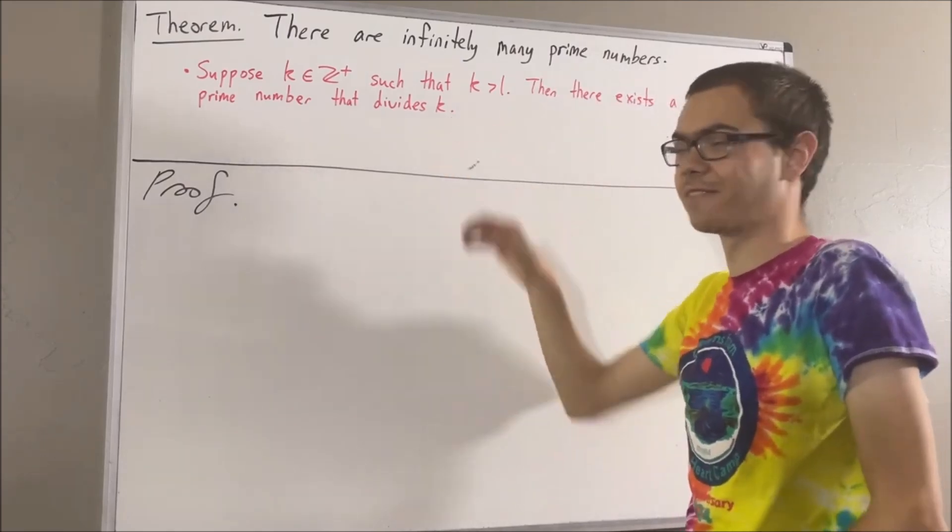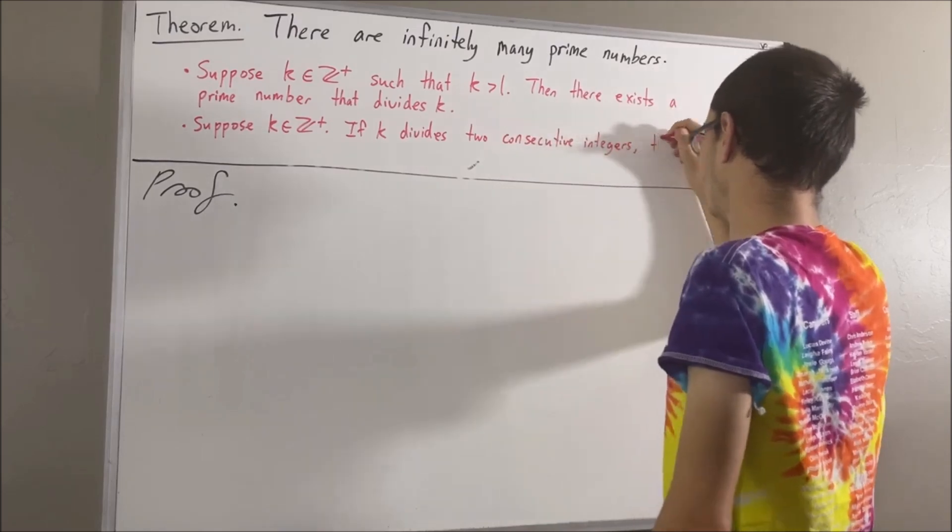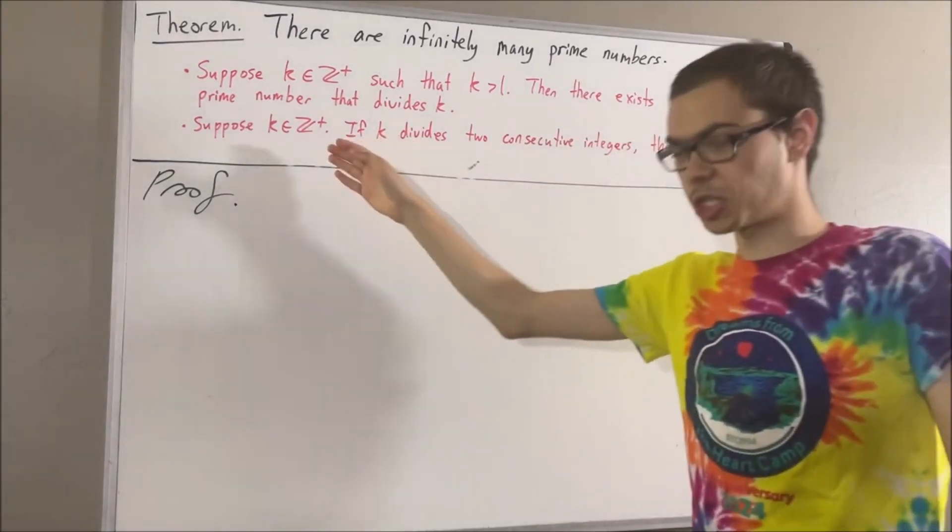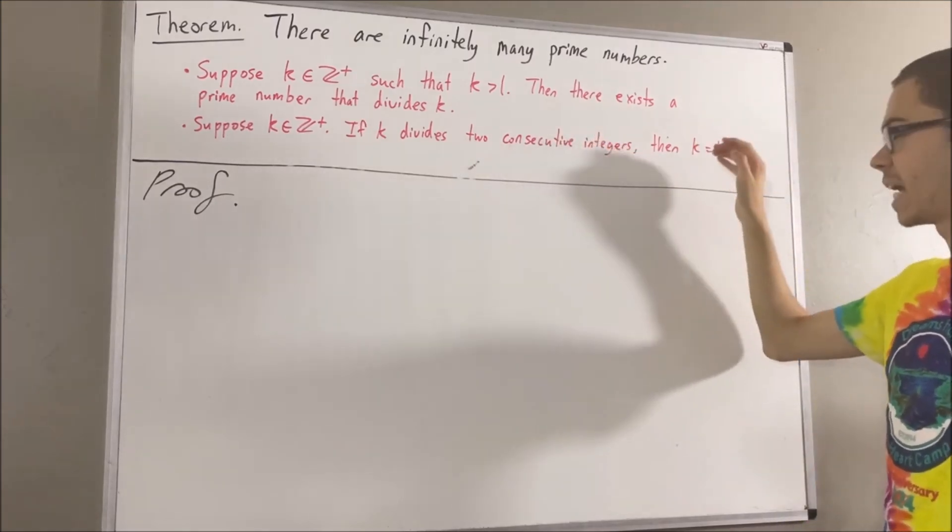And another fact that we're going to use is the following. Suppose k is a positive integer. If k divides two consecutive integers, then k is equal to 1.